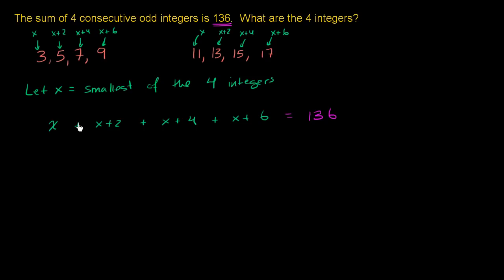Let's add these x terms together. We have 1x, 2x's, 3x's, 4x's. So we can rewrite those as 4x. And then we have 2 plus 4, which is 6, plus another 6 is 12. So 4x plus 12 is equal to 136.